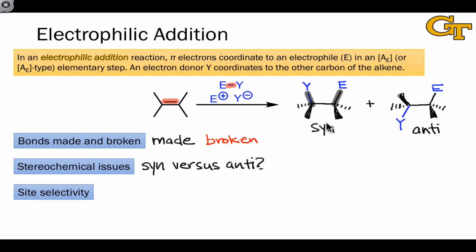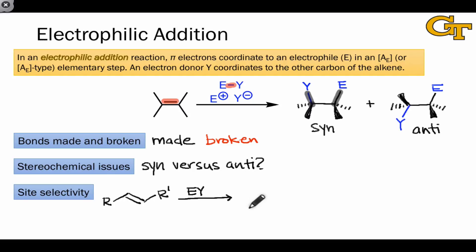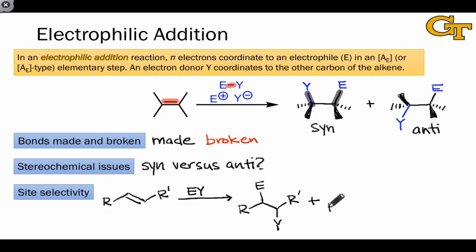Site selectivity is also important in electrophilic additions. Imagine working with a substrate with two different R groups linked to the carbons of the alkene. Treatment with an electrophilic reagent EY could give rise to two different constitutionally isomeric products depending on which carbon of the alkene ended up linked to the electrophile E. If the carbon on the left ends up linked to the electrophile, the product would look like one structure, but if E ends up linked to the other carbon, a different product results — and these two molecules are constitutional isomers.